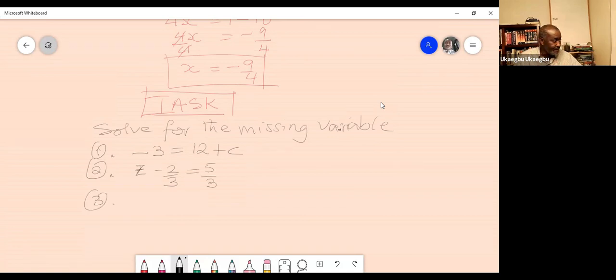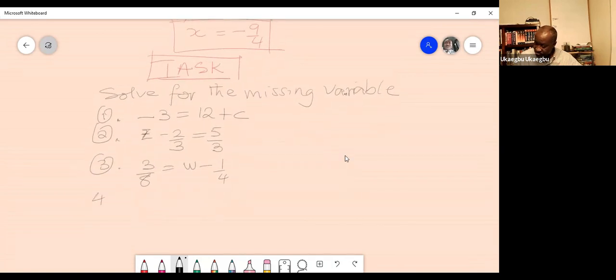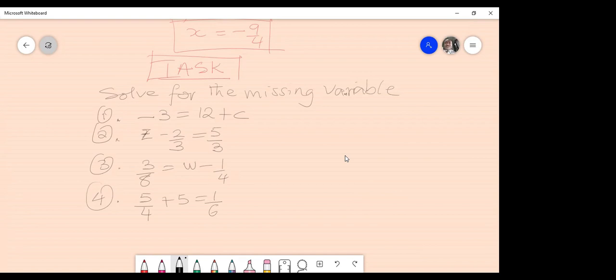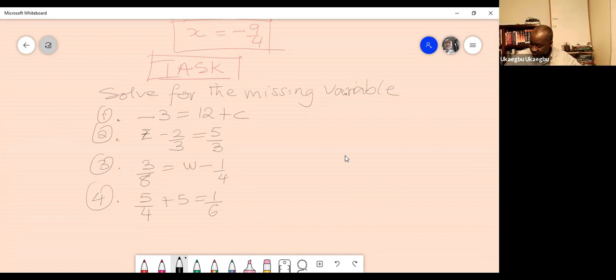Number 3. 3 over 8 equal to W, like world, minus 1 over 4. And then the fourth one, the fourth one is 5 over 4 plus X equal to 1 over 6. That's it. Make sure you have 5 in your name. 4 plus X and plus 5. Yes, that's plus X. Thank you. 4X plus X, equal to—no, 5 over 4 plus X equal to 1 over 6. 5 over 4 plus X equal to 1 over 6.